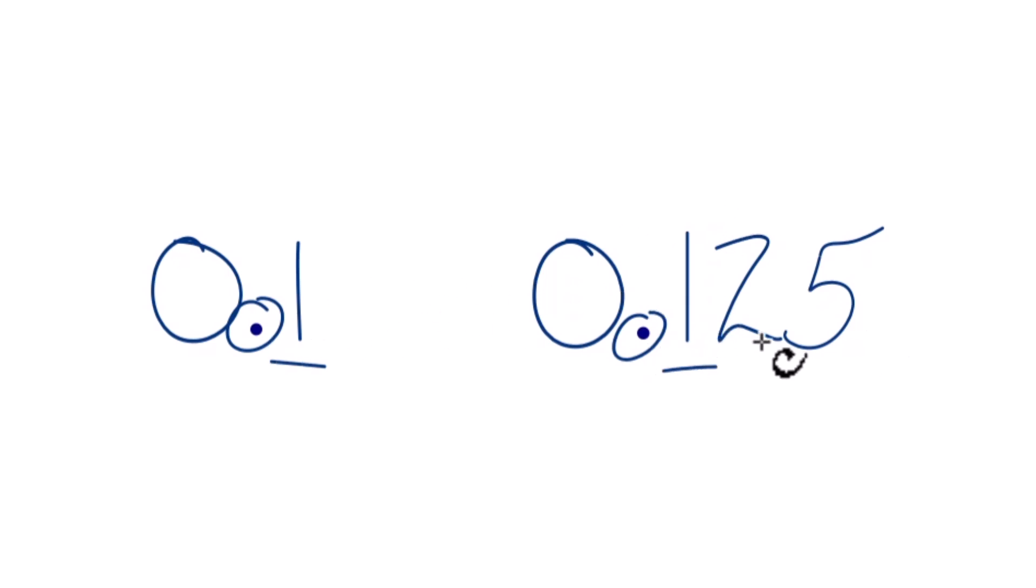So we're going to go to the hundredths place. Right here we have 2. For 0.1, there's nothing there, so we just assume that to be 0, and we're going to compare the hundredths place, 2 and 0. 2 is greater than 0.